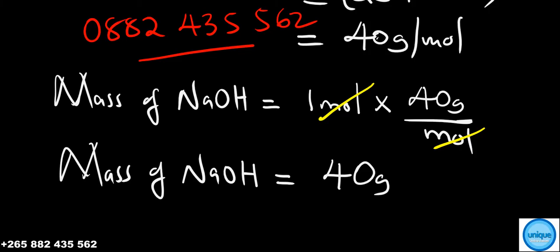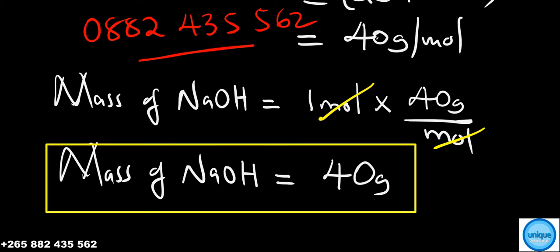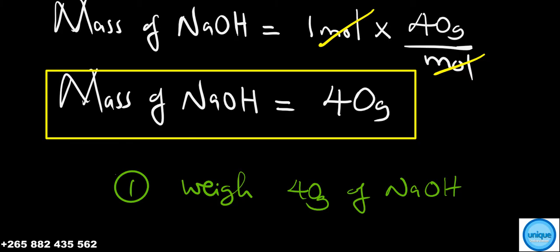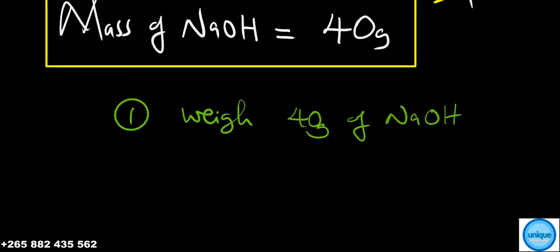The mass of substance is 40 grams. You need 40 grams of sodium hydroxide. First step, you're going to weigh 40 grams of sodium hydroxide on a beam balance. Second step, you're going to transfer the measured sodium hydroxide.